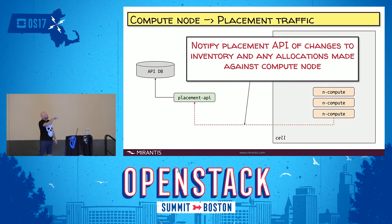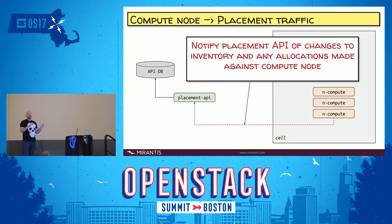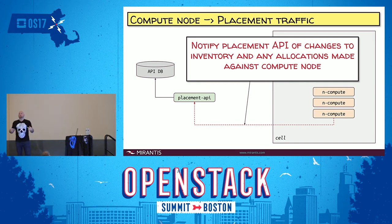Here's a diagram of compute node to placement communication. The compute node is telling the placement service whether there's any update in its inventory for any of its known resources. Also, right now, the compute service is saying this instance is consuming this amount of resources on me, and it's communicating that information to the placement service.